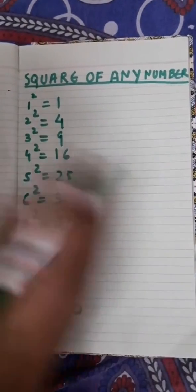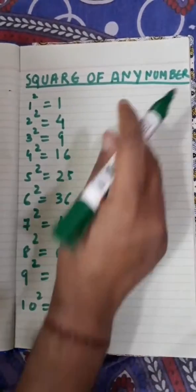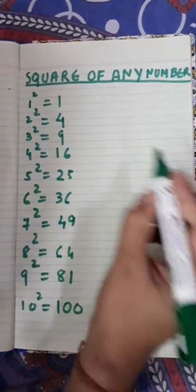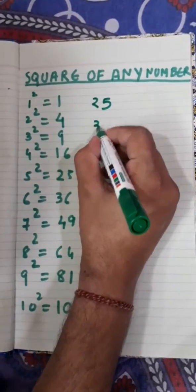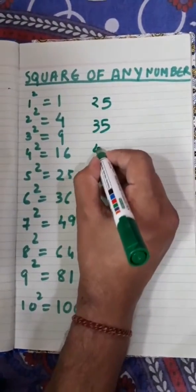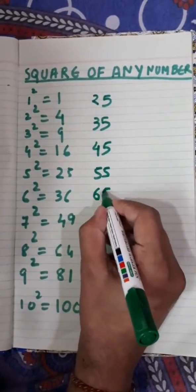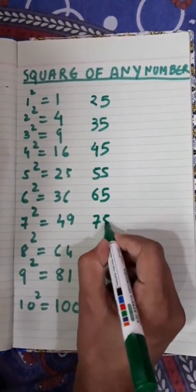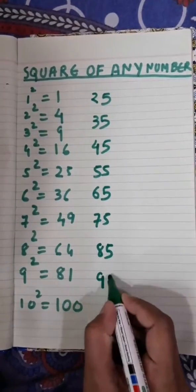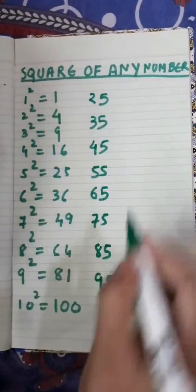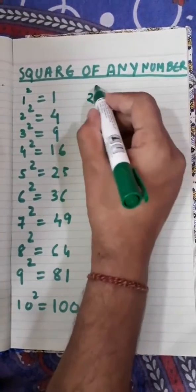First we will try to solve all numbers that have 5 at the end — like 25, 35, 45, 55, 65, 75, 85, 95. For that, what you have to do is first write the square of the last digit, which is always 25.